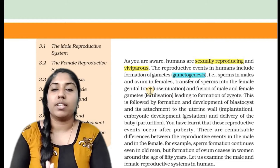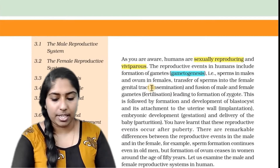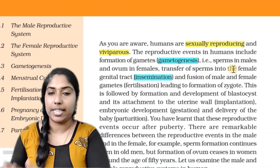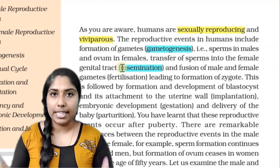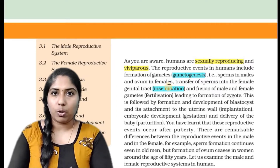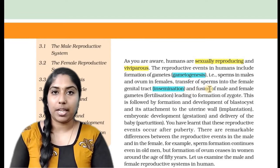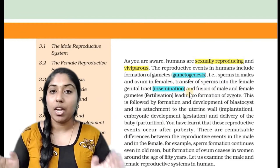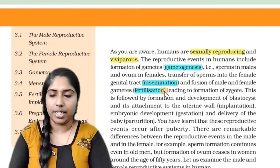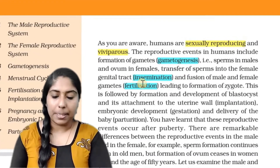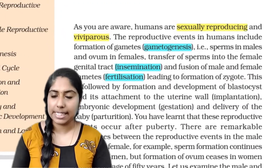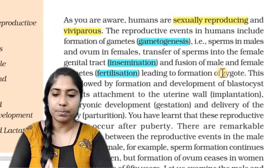The next process is insemination, which is the transfer of sperm into the female genital tract. After that, the next event is fertilization — the fusion of male and female gametes leading to the formation of a zygote.